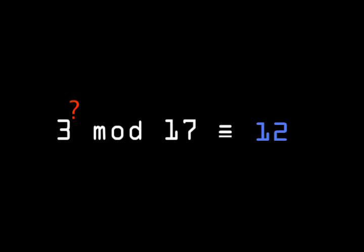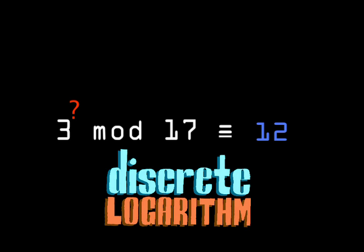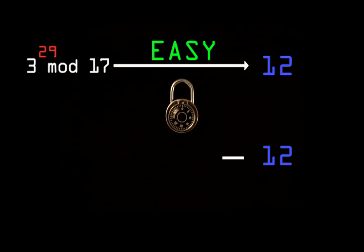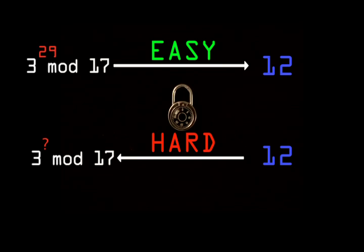Now, the reverse procedure is hard. Given 12, find the exponent 3 needs to be raised to. This is called the discrete logarithm problem. And now we have our one-way function. Easy to perform, but hard to reverse. Given 12, we would have to resort to trial and error to find the matching exponent.